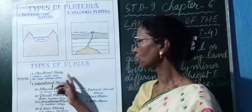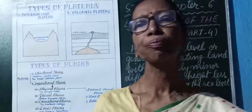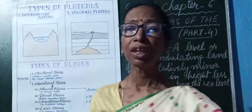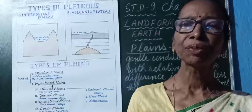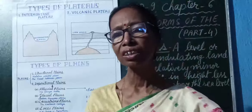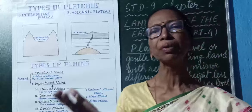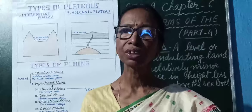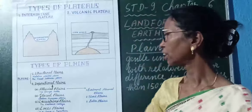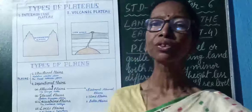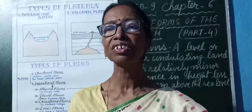Plains are formed on the surface of the earth in two ways. Sometimes they are formed due to internal processes or internal forces — the land mass can be uplifted or subsided, forming plains known as structural plains. And sometimes they are formed due to the deposition of sediments, known as depositional plains. So due to their formation process, plains are divided into two categories: first, structural plains, and second, depositional plains.